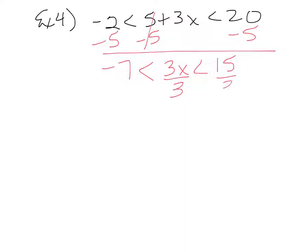Then we divide everything by 3. A quick side note: if I had a negative 3 in the middle, what would you have to do? Flip those inequality symbols. But because it's just positive 3, we're good — we don't have to worry about that. So dividing by 3 gives us negative 7 thirds is less than x, which is less than 5.